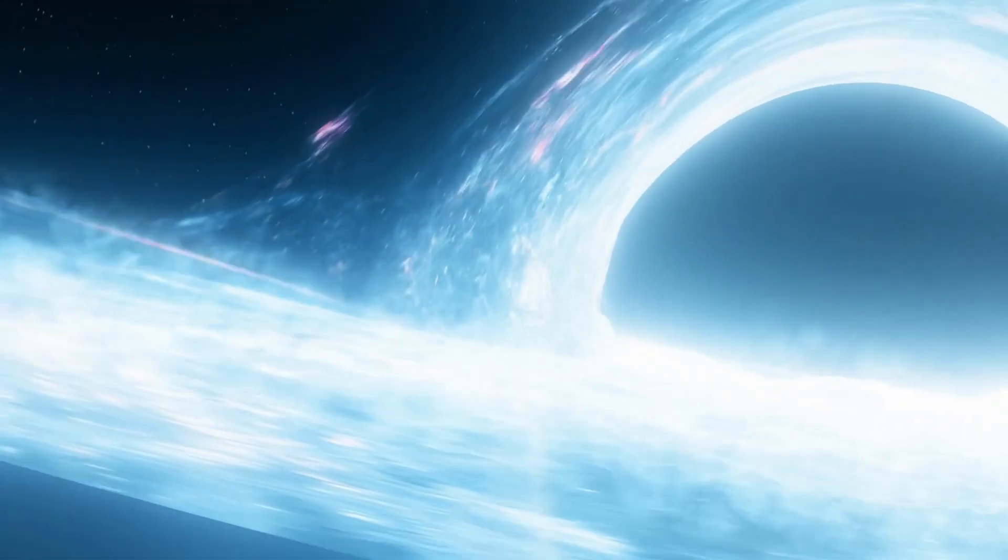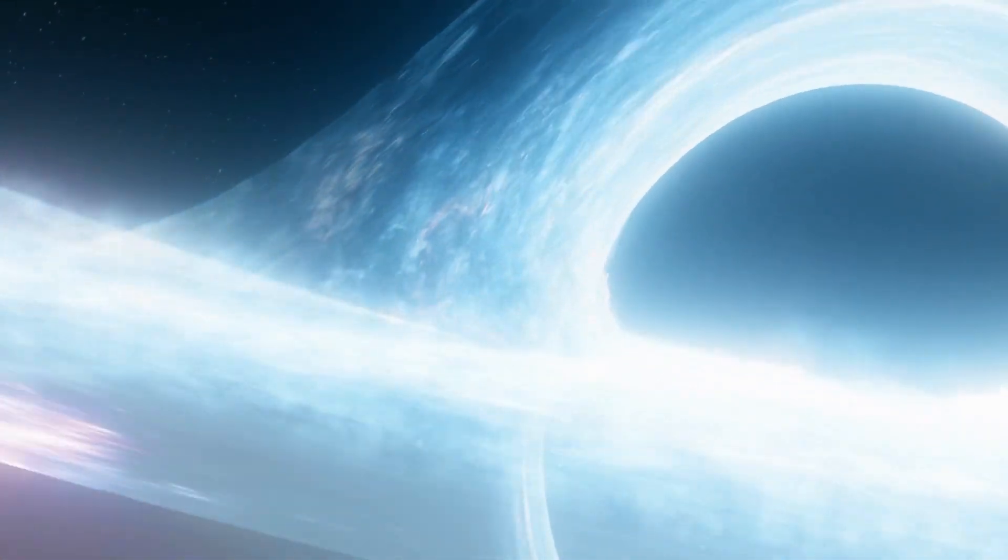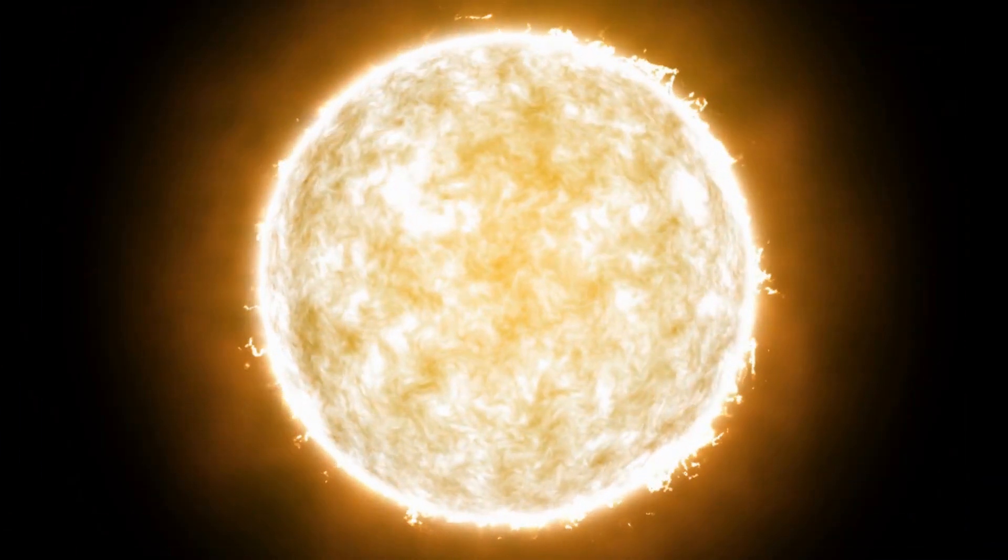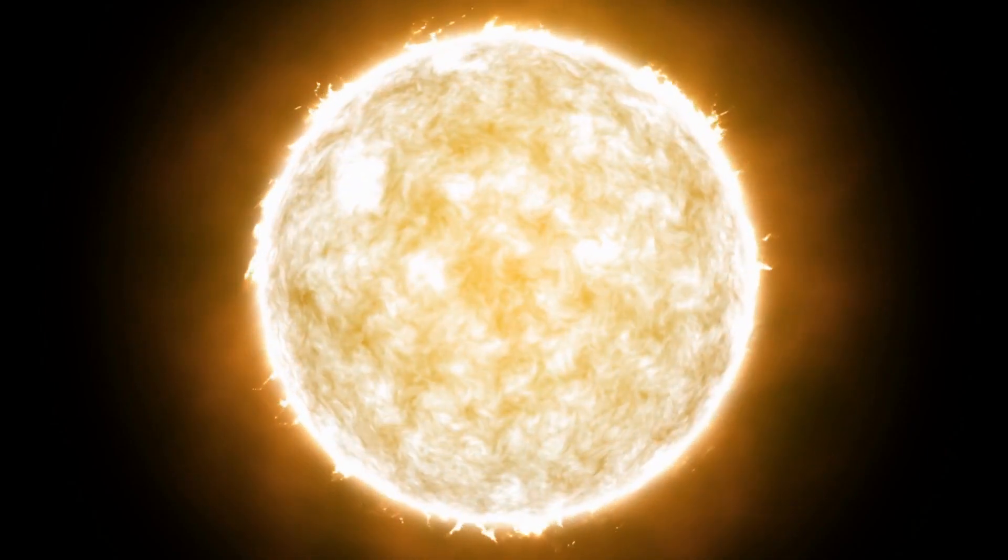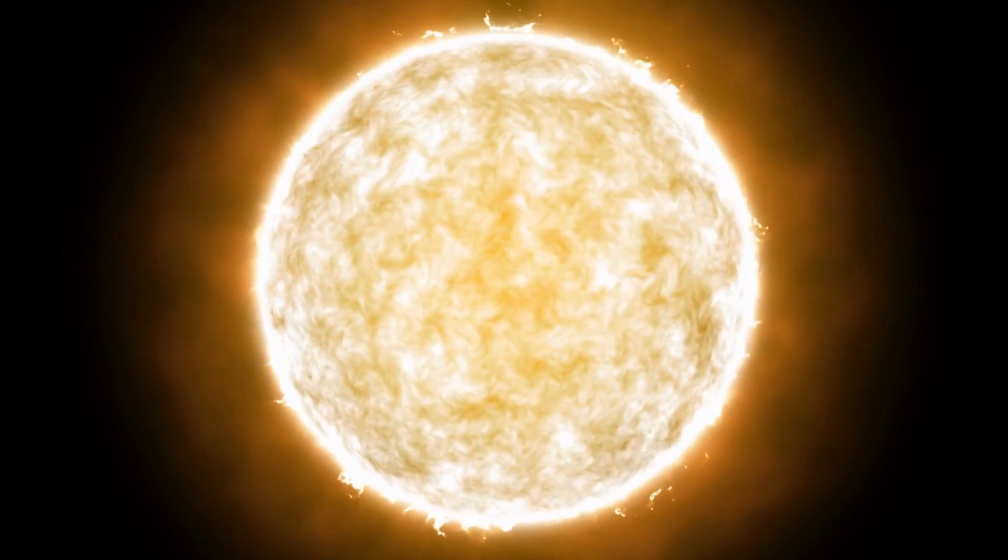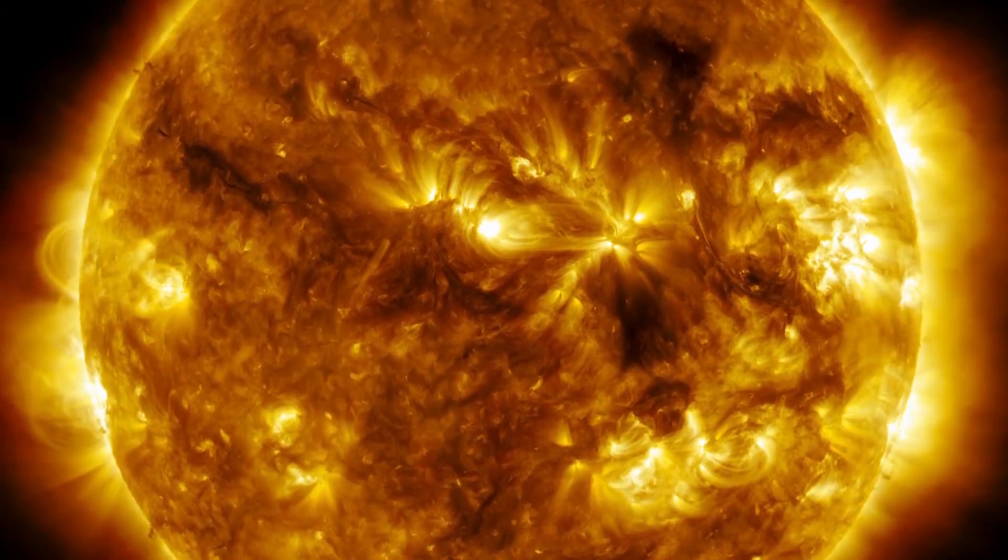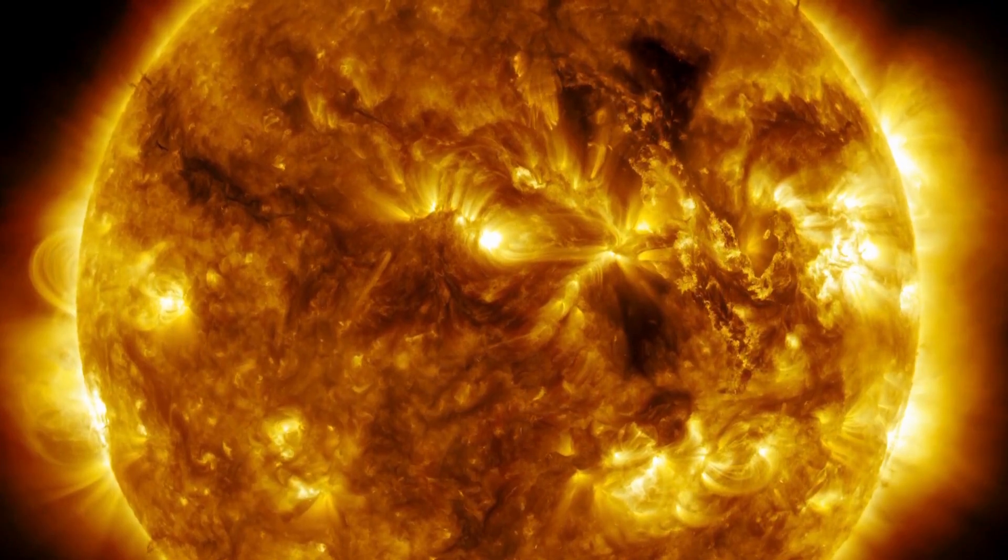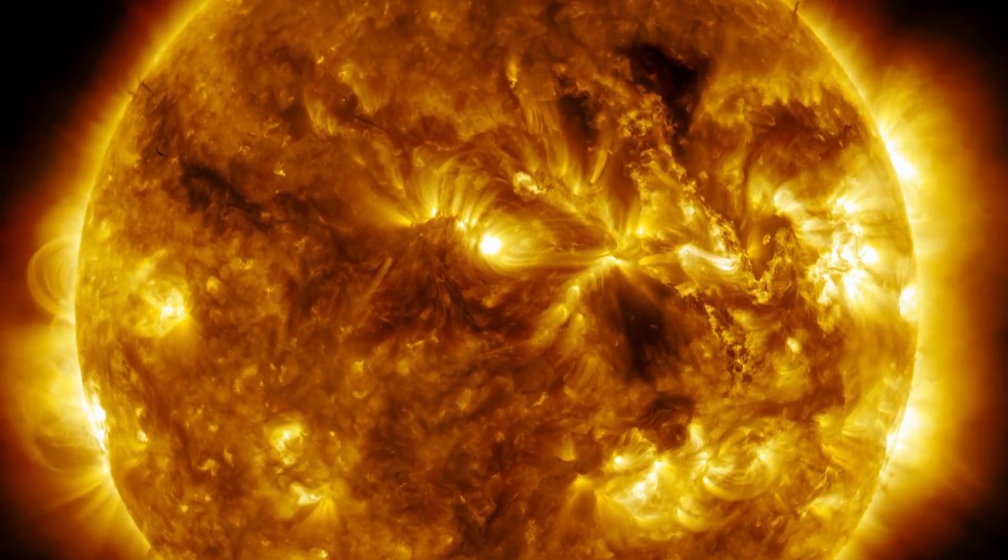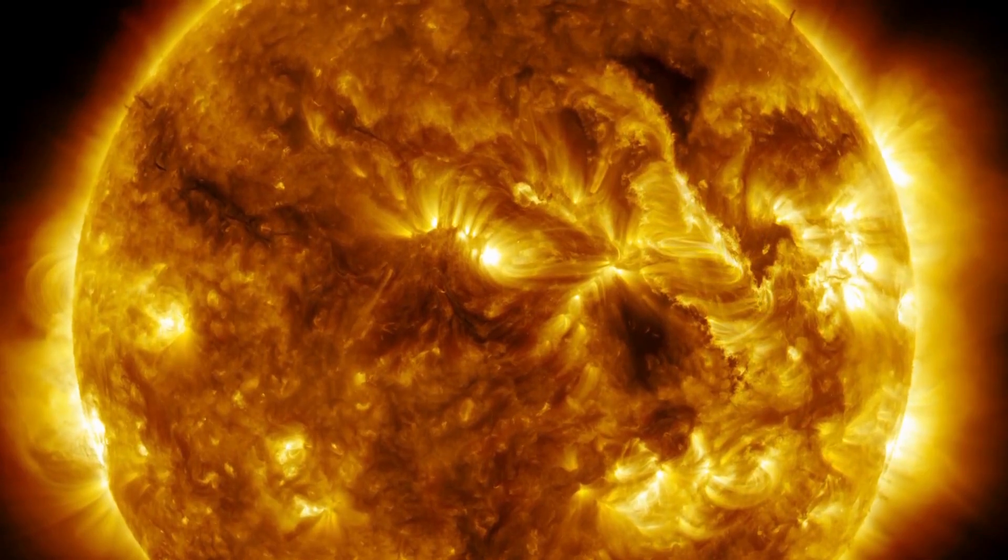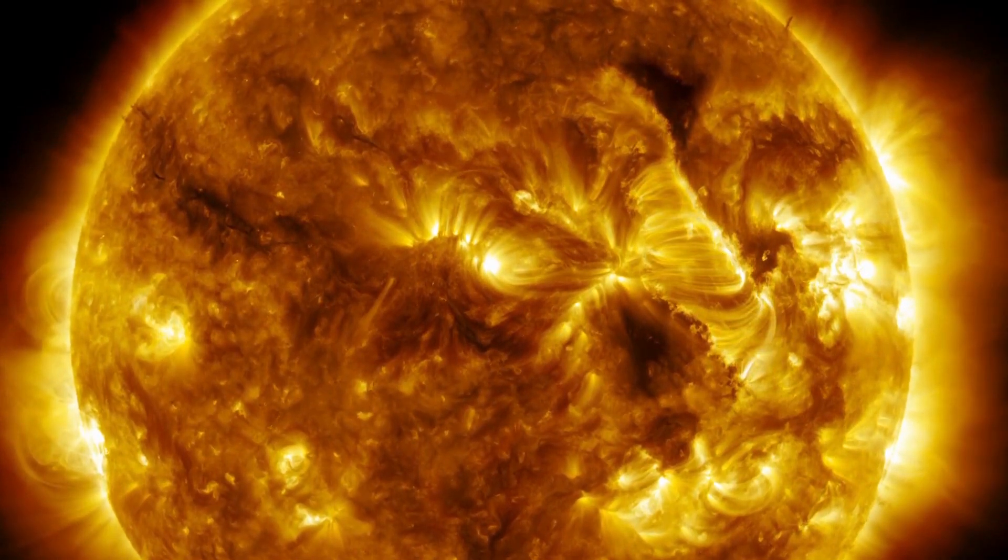To understand how black holes formed and what happens inside them, it is necessary to go back to the life cycle of a massive star. These massive stars are true cosmic powerhouses fueled by the incredible nuclear fusion reactions that take place in their cores. The sun's energy source comes from the fusion of hydrogen into helium. During this process, two hydrogen atoms combine in a collision and form a helium atom. As long as the star has enough hydrogen to carry out the fusion, it can maintain its brightness.